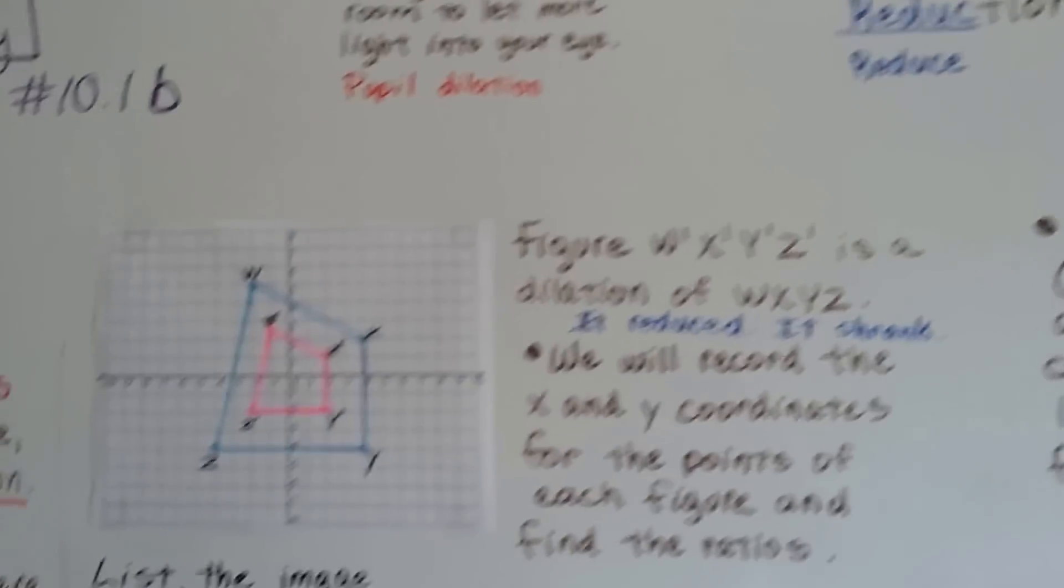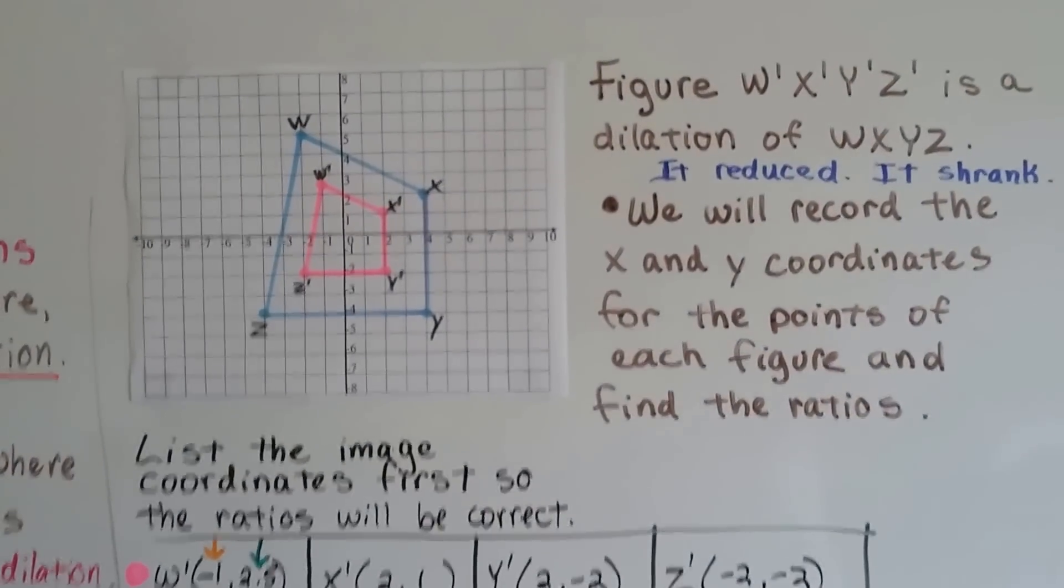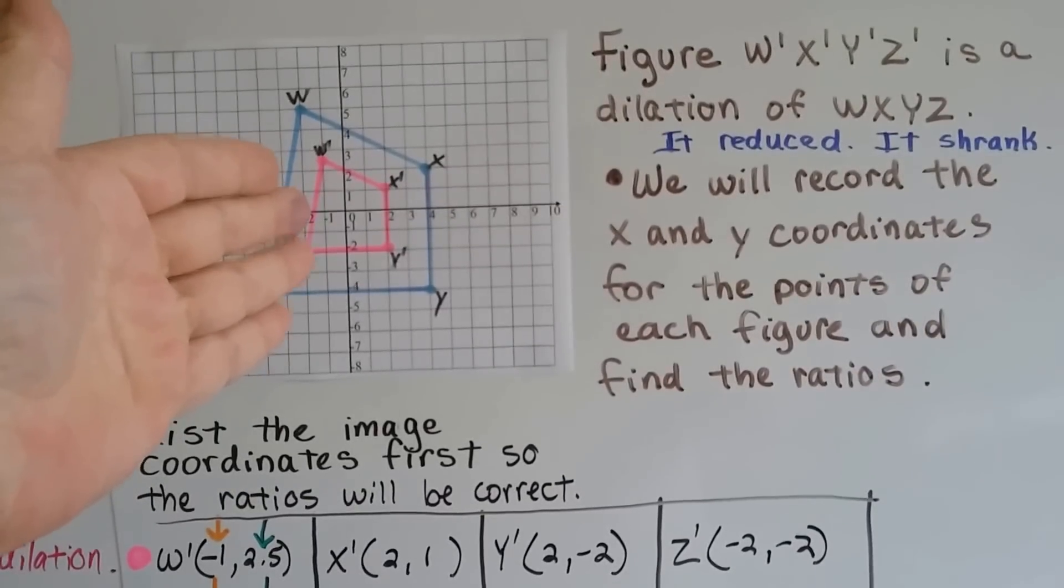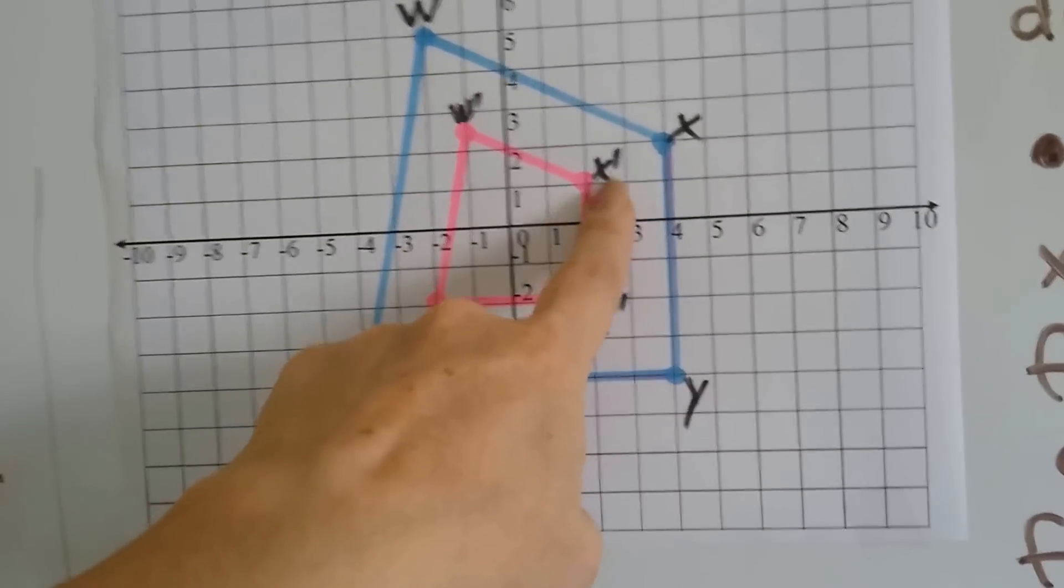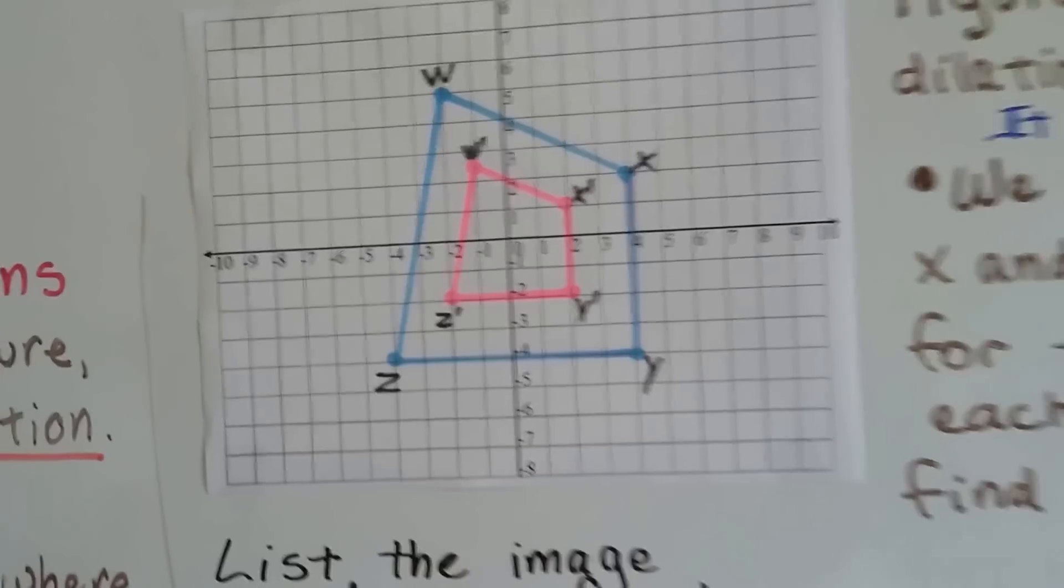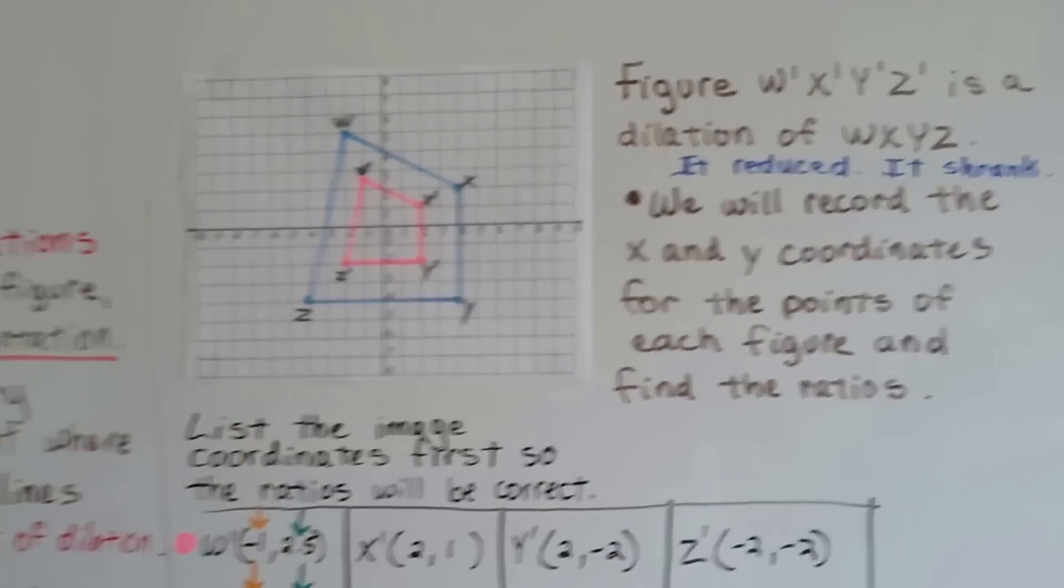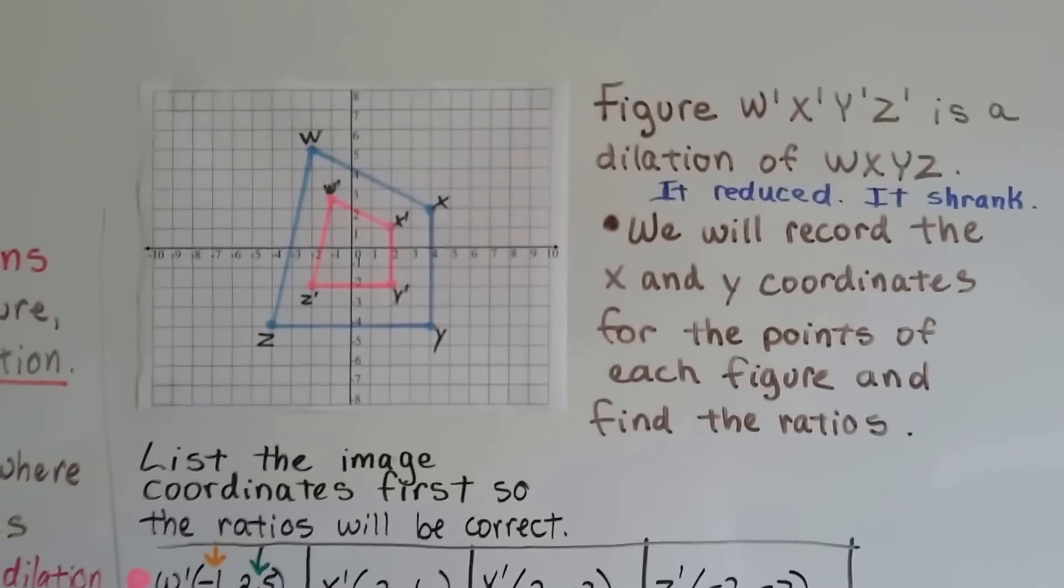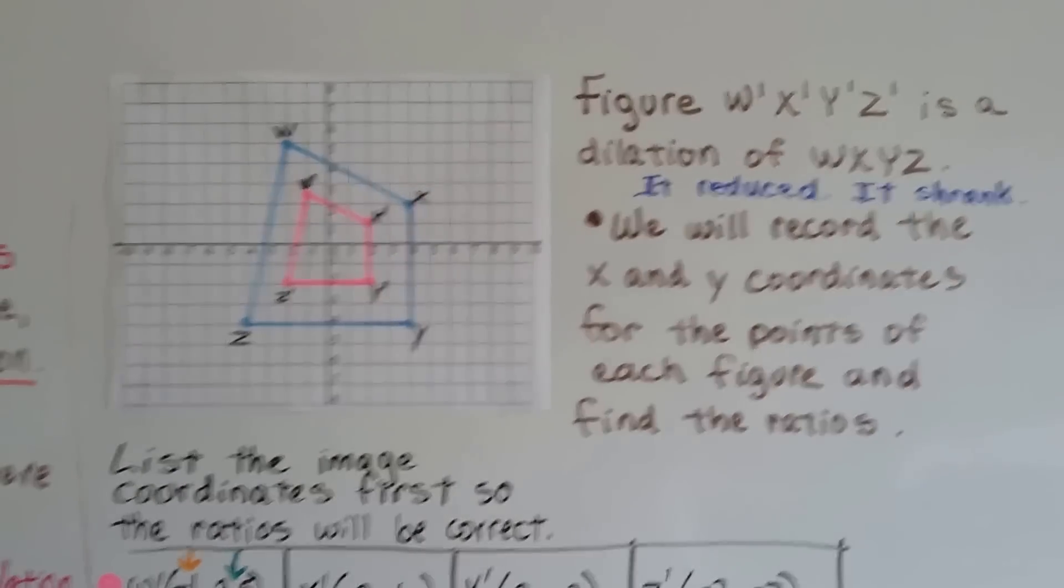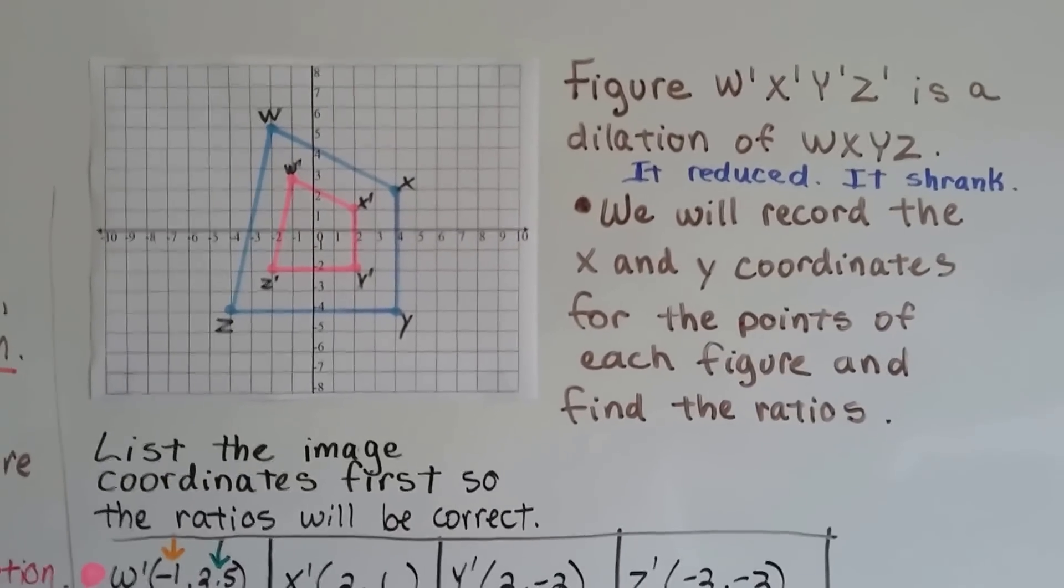So here's our figure. We've got this blue shape right here and it's got an image inside of it that's pink. And you can see from the little tick marks that the pink one is the copy, the image. The blue one is the pre-image. So figure w prime, x prime, y prime, z prime is a dilation of w, x, y, z. It's reduced. It shrank.